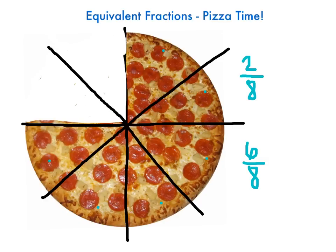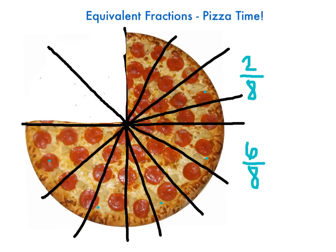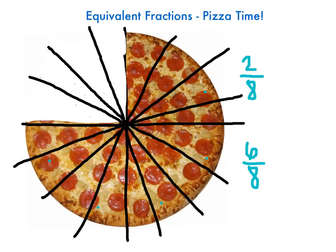Now let's say some more people come, and maybe eighths aren't really what we want — we need smaller slices to get more bang for our buck. So we're going to cut our eighths in half. We'll make believe I'm cutting these right in half, and I'm going to cut my slices up here in half too. Let's make believe these are the exact same size. So let's go back and figure out how many slices of pizza we have now.